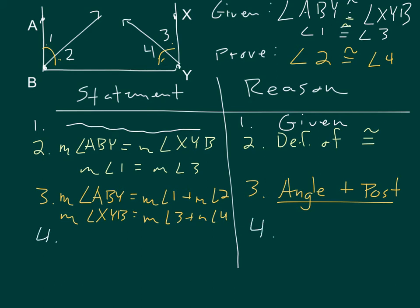Here's the trickiest step. What I need to do is say, well, I already know that ABY and XYB have equal measurements. So I can set them equal to each other in an equation. But instead of writing ABY, I'm going to write 1 plus 2. And instead of writing XYB, I'm going to do 3 plus 4. Because they're the same thing. I've already defined that.